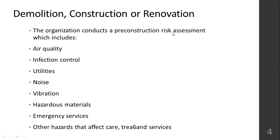Strategies to control infection spread during construction include creating alternative routes for patients and visitors to avoid the construction area, diverting corridor traffic so that nobody is at risk of infection. Utilities must also be planned — will water supply be stopped in certain sections? How will electricity function during construction? Will you need additional standby generators?